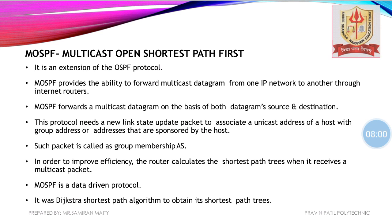The new link state update packet ensures every router is updated about which is the next shortest link to reach from one router to another. Such a packet is called a group membership associate. The router calculates shortest path trees when it receives a multicast packet by updating link state packets. MOSPF is a data-driven protocol and uses Dijkstra's shortest path algorithm to obtain its shortest path tree. The detailed aspect of Dijkstra's algorithm is not in the syllabus, but it is important to know MOSPF uses it.